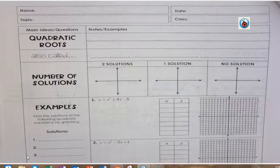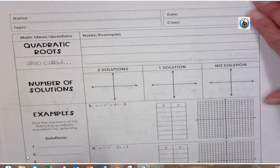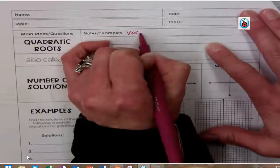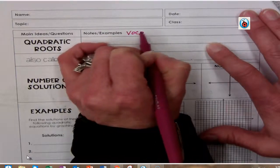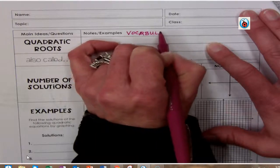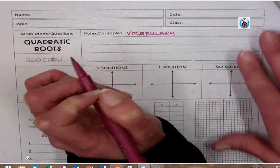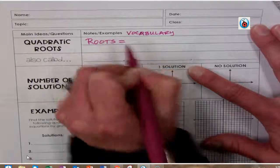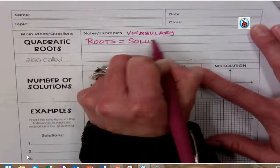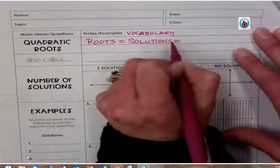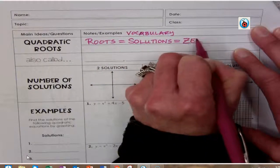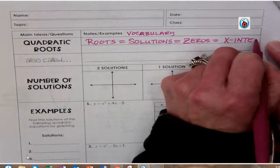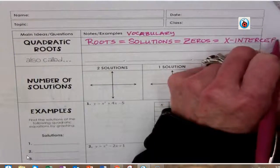All right, so now we're going to be talking about quadratic roots and solutions. This is very important vocabulary. Your roots equals is the same thing as your solutions, which is the same thing as your zeros, which is the same thing as x-intercepts.